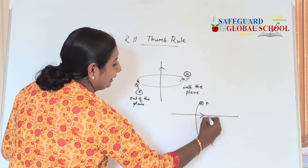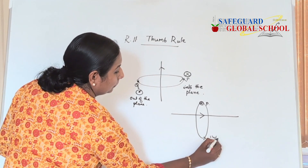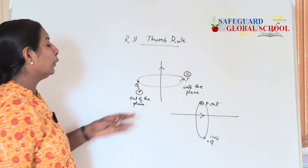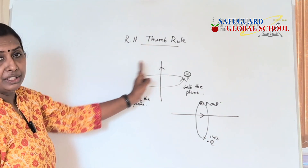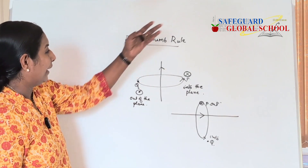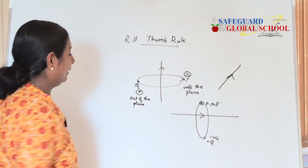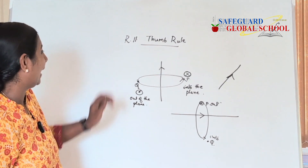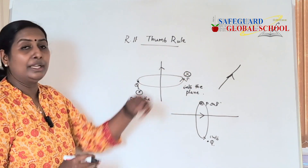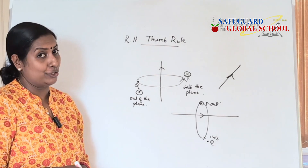So when we draw it, this will be into and this will be out. You can try out your own orientations of these conductors and see how it will look. You can apply your own orientations of the conductor. Thank you very much, that is all for this session.